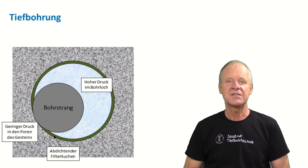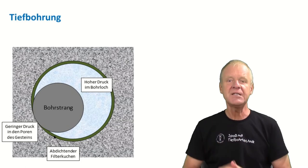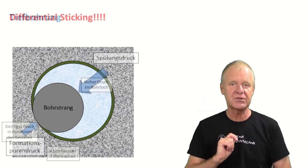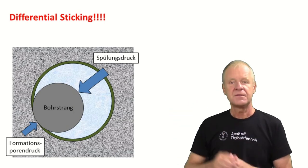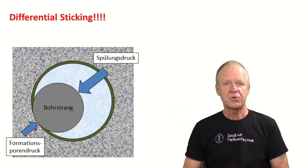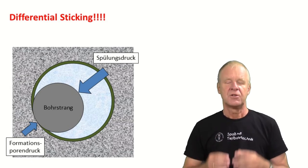This is what we see here in this picture. On one side is high mud pressure acting on the drill string, on the other side smaller formation pressure acting on the drill string, and between the two pressure levels is a filter cake which acts as a seal. This is just like the suction cup scenario, with high pressure on one side and the vacuum on the other side.